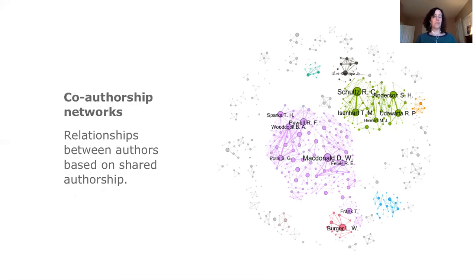For example, relationships between researchers based on shared authorship can be represented in what's called a co-authorship network. This type of network can help us identify key researchers or research silos, and can also indicate something about the flow of information and knowledge across the network.